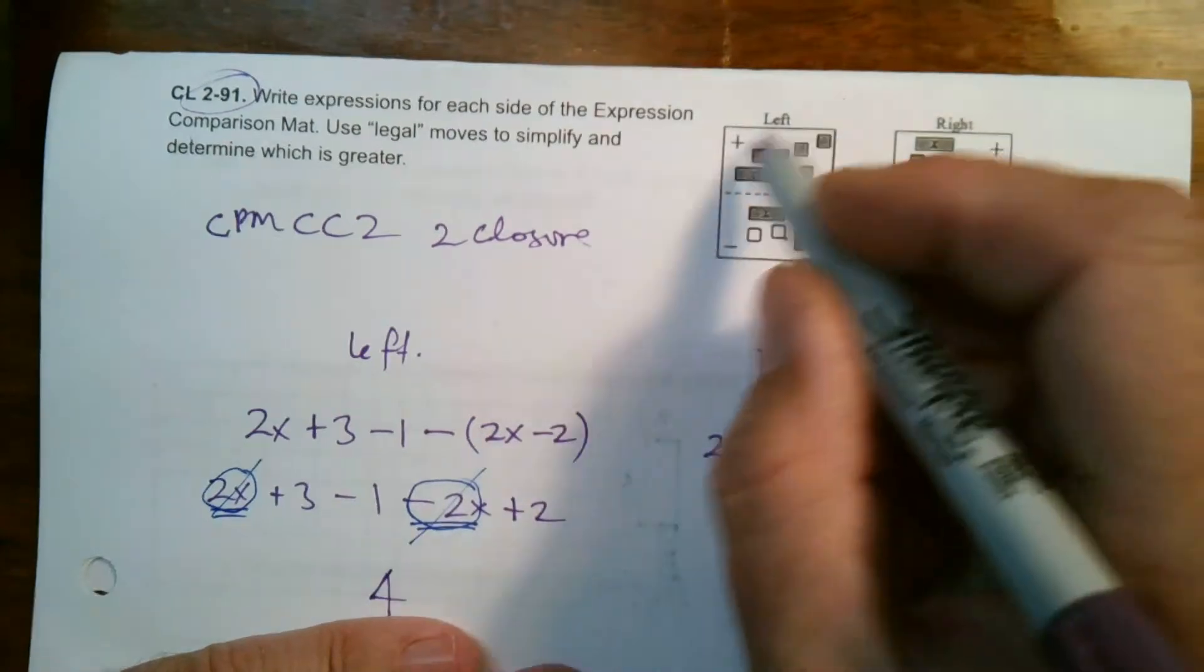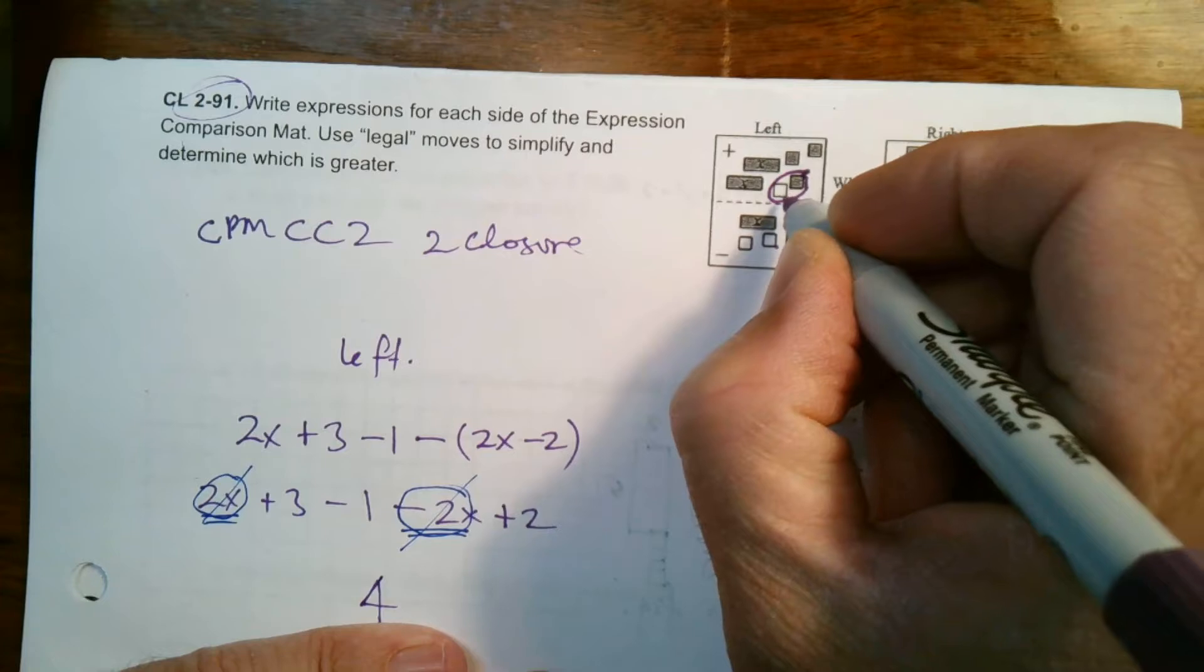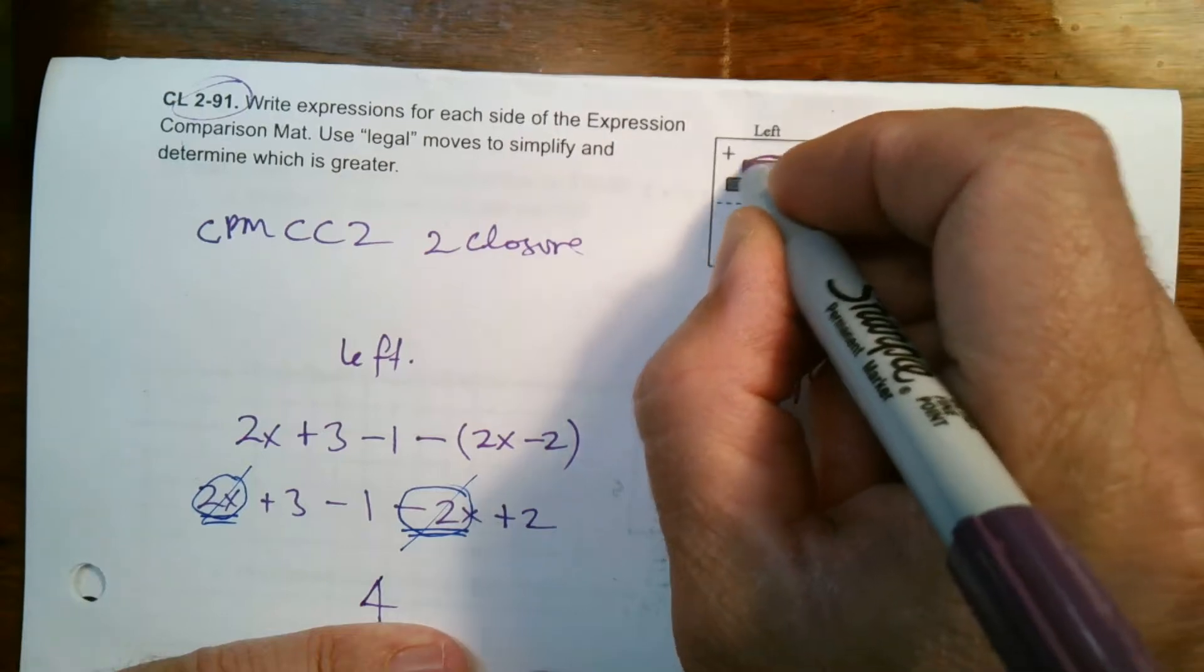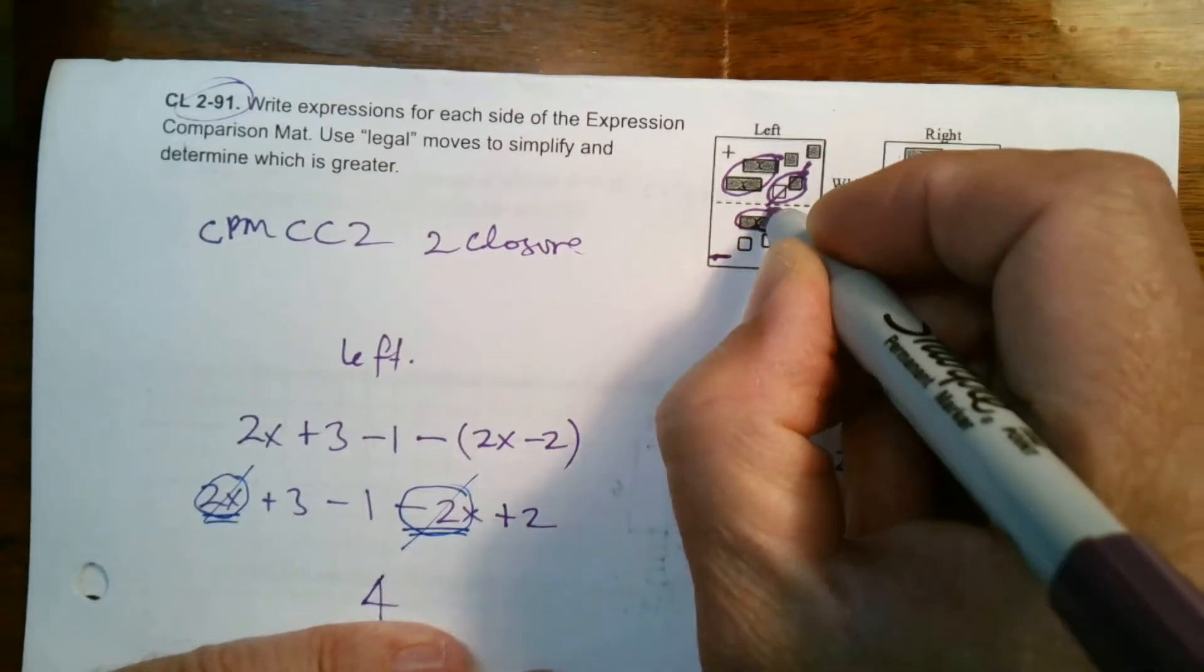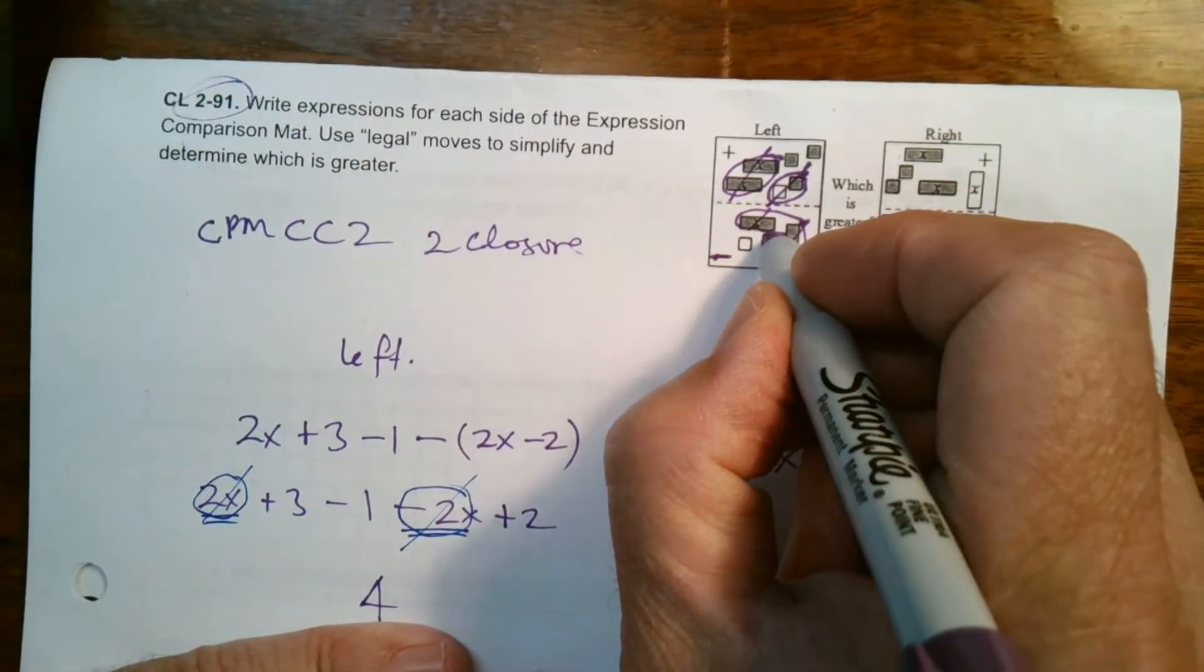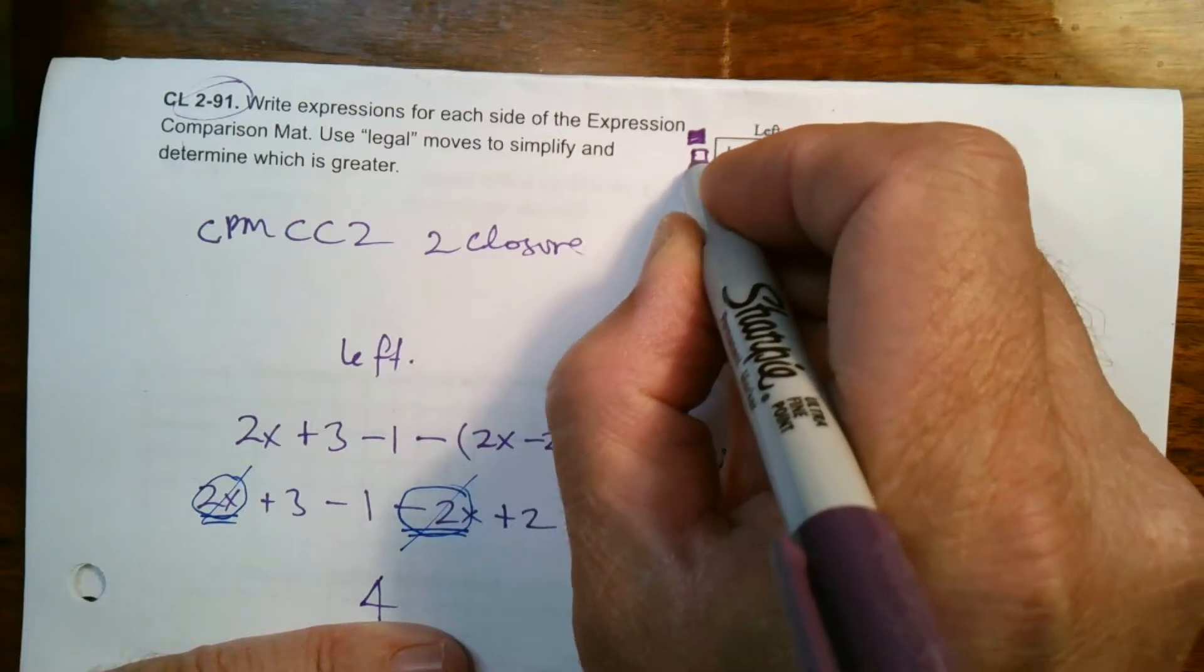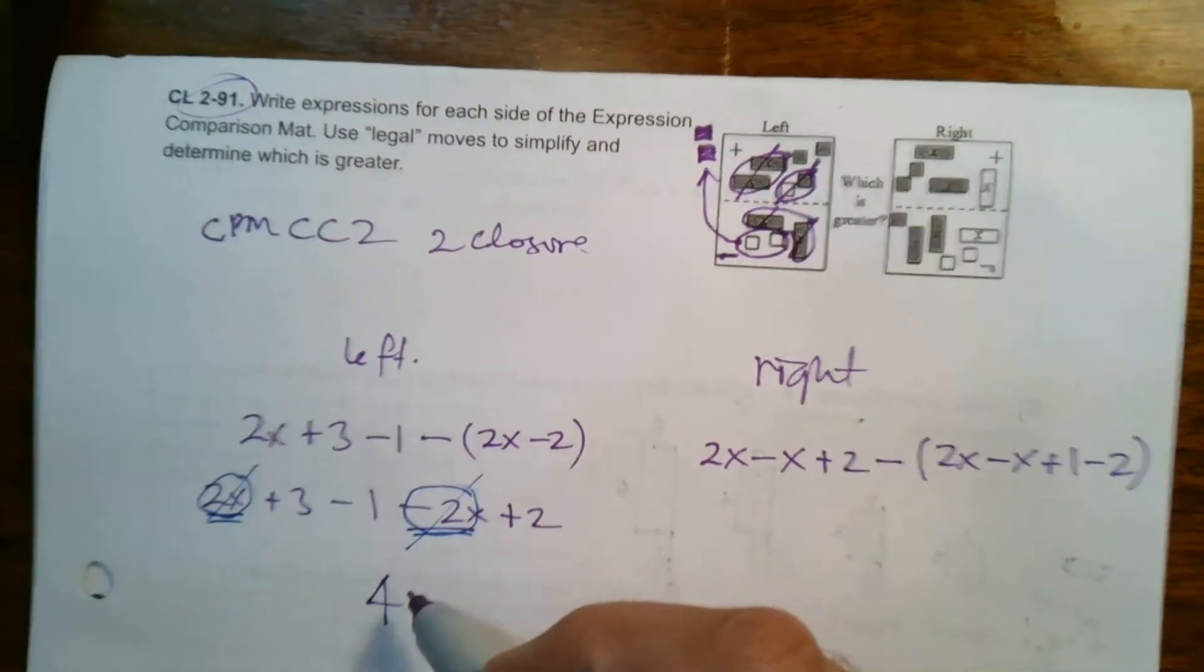And so let's look at this left side simplifying using the tiles. If I did that using the tiles, what do I see? I have a positive negative on top, those can cancel. I also have two x's on top minus two x's on bottom, so those also cancel each other out. And then I need to take these other two tiles that are on the bottom, move them to the top. And when I do, they flip over and they become positives. So what's left is one, two, three, four, positive four, which is what I had here.